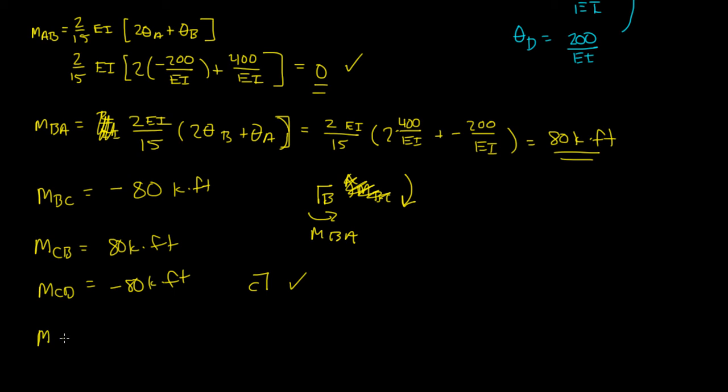Now, MDC, I'll do the equation for this one. It was 2EI over 15 times 2 theta D plus theta C, and that's equal to 2EI over 15, 2 times theta D. Theta D was 200 over EI plus negative 400 over EI, right? And, again, EIs all cancel out, and if you solve this, again, you get 400 minus 400, and that's 0, 0 kip foot.